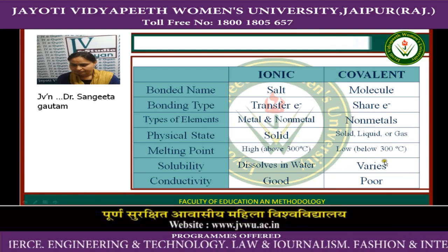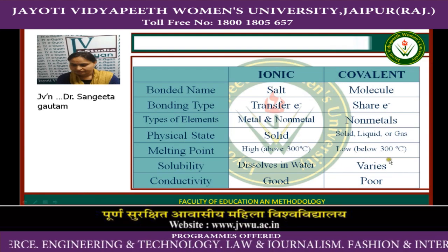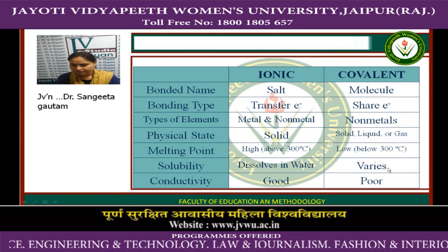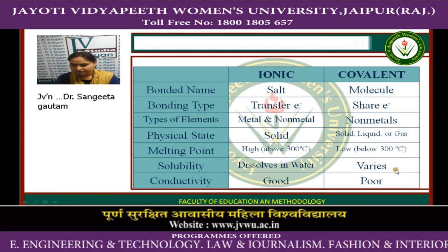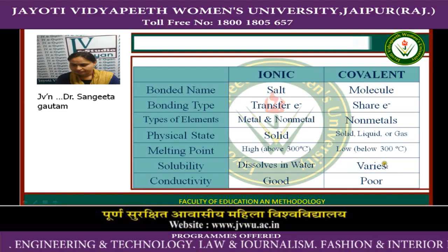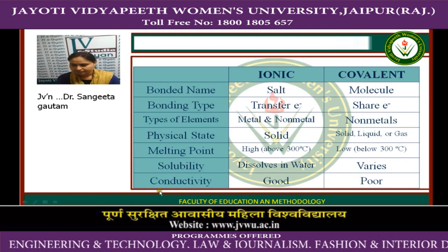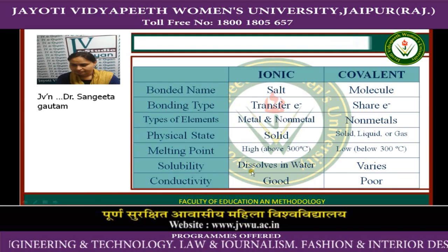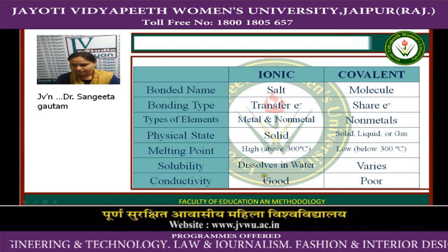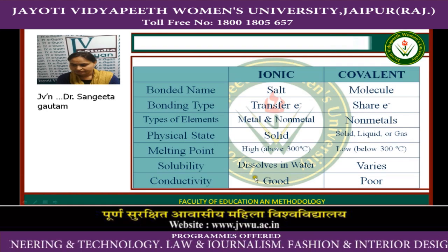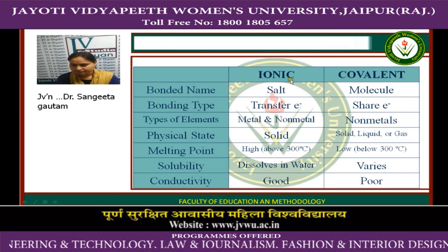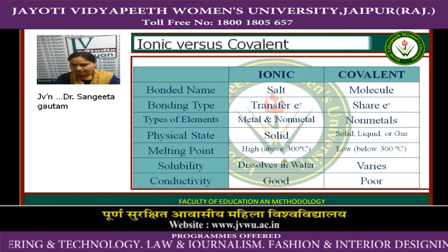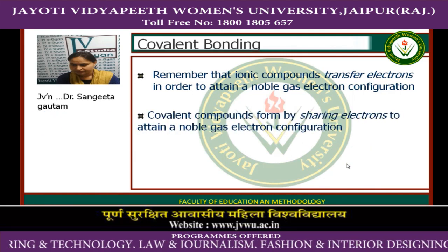Covalent molecules are generally not dissolved in water or polar solvents. They are non-polar, so they dissolve in non-polar solvents like benzene, ether, petroleum ether, or acetone. Regarding conductivity, ionic compounds are very good conductors in their molten or solution state because they have ions available for movement, whereas covalent bonds are very poor conductors. These are the basic differences between ionic and covalent bonding.